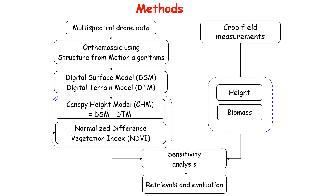In this study, we acquired the multispectral data using the RedHead-P sensor. We created the orthomosaic using the Structure from Motion algorithm. Then we derived the DSM and DTM, from which we calculated the Canopy Height Model, which will be used to characterize the crop height.